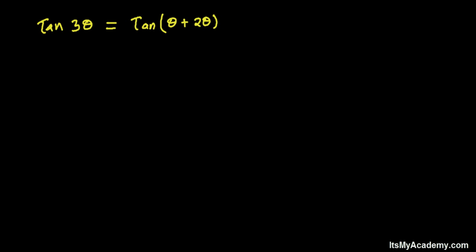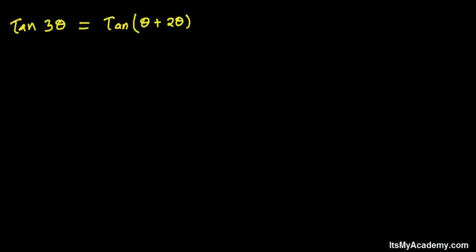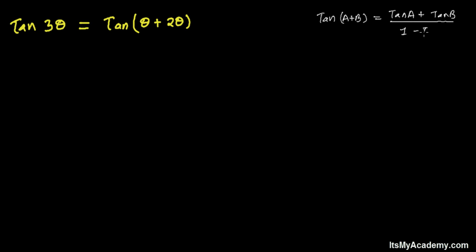Now we're going to apply another formula here. That formula — let me write it in short — is: tangent of (a + b) equals tangent of a plus tangent of b, divided by 1 minus tangent of a times tangent of b.